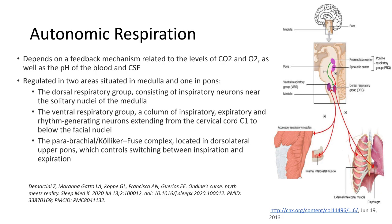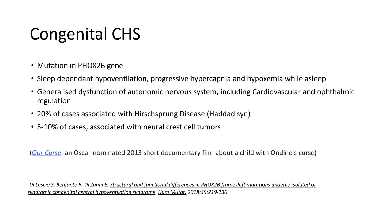A quick reminder about autonomic respiration: as we can see in the picture, this depends on feedback mechanisms related to levels of carbon dioxide and oxygen, as well as the pH of blood and CSF. It is regulated in two areas — one in the medulla and one in the pons. We have the dorsal respiratory group, consisting of inspiratory neurons near the solitary nuclei of the medulla, and the ventral respiratory group, a column of inspiratory, expiratory, and rhythm-generating neurons extending from the cervical cord C1 to the lower facial nuclei. There is also the parabrachial or Bötzinger complex in the dorsolateral upper pons, which controls switching between inspiration and expiration.